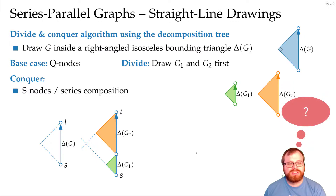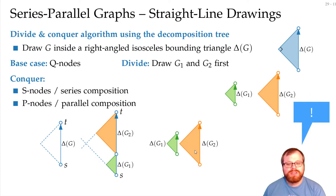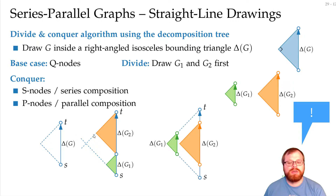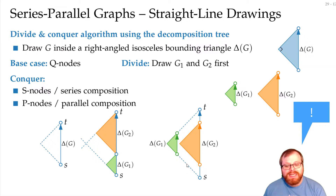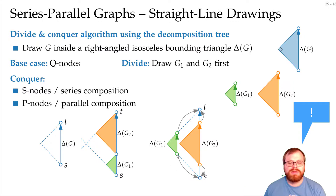How about the P nodes? There we would want to place those two next to each other. But now it's a bit more tricky than before. We want to place a triangle around the whole drawing, but then we have to identify these two vertices and these two vertices, so they have to be placed at the same position. So actually we have to move the vertices down here and the vertices up there.